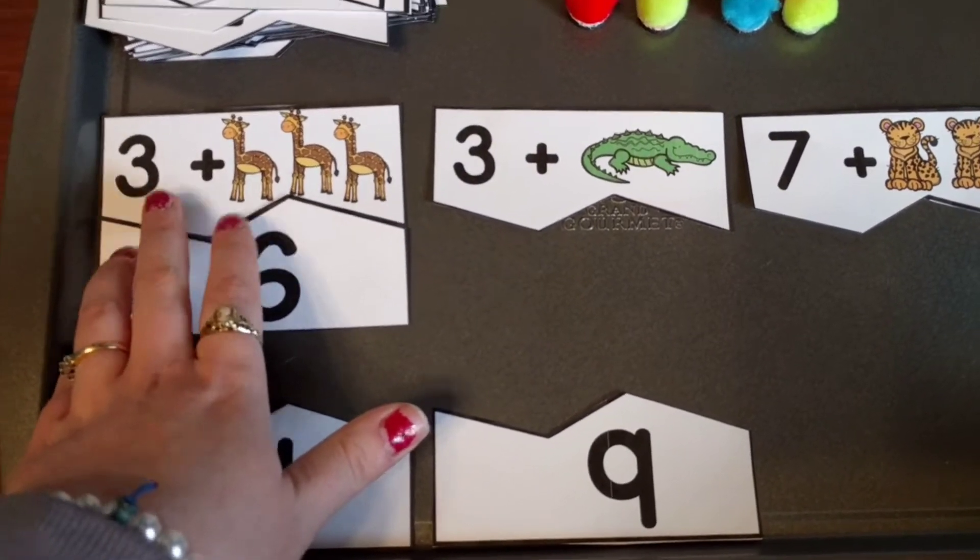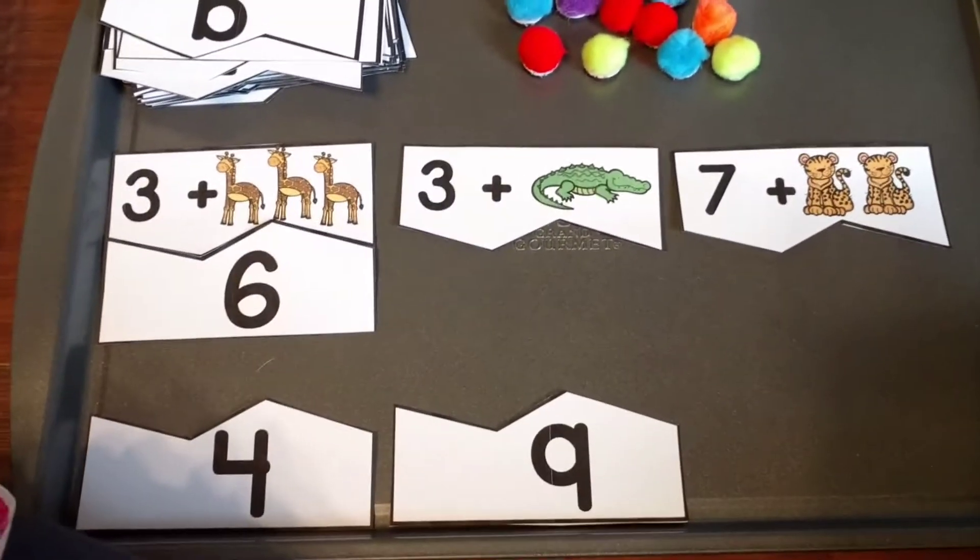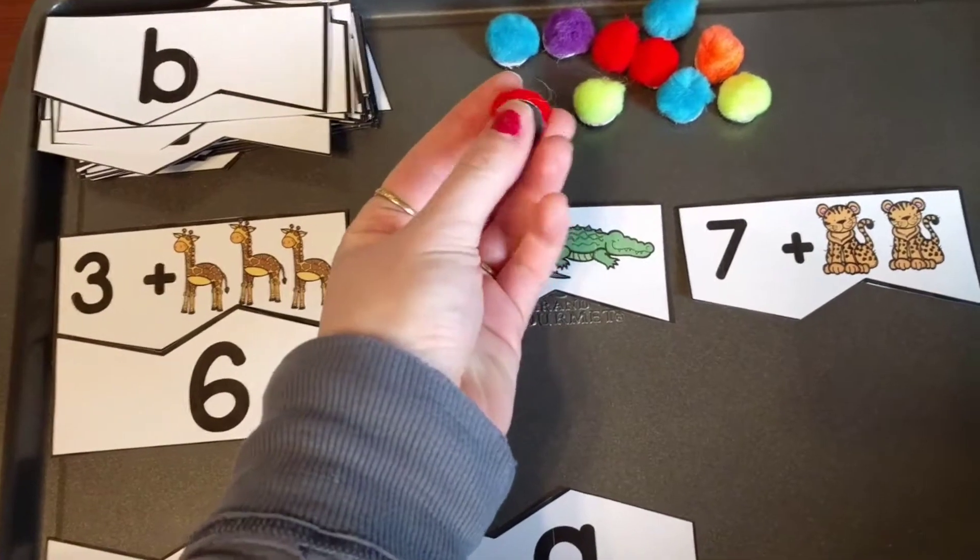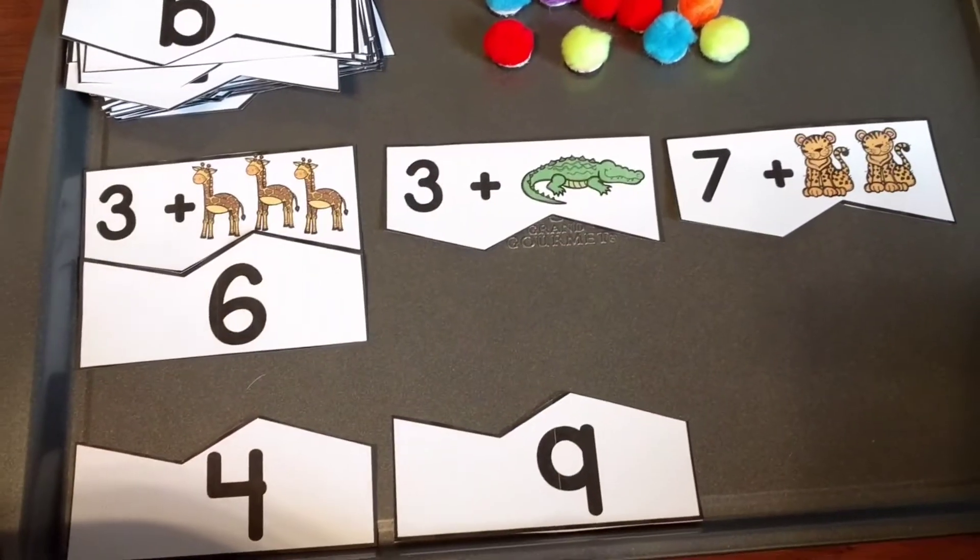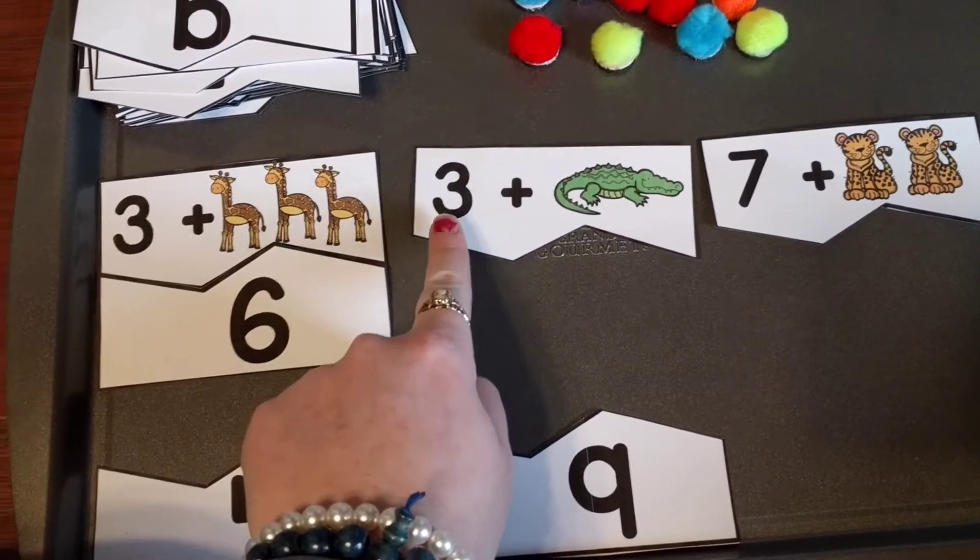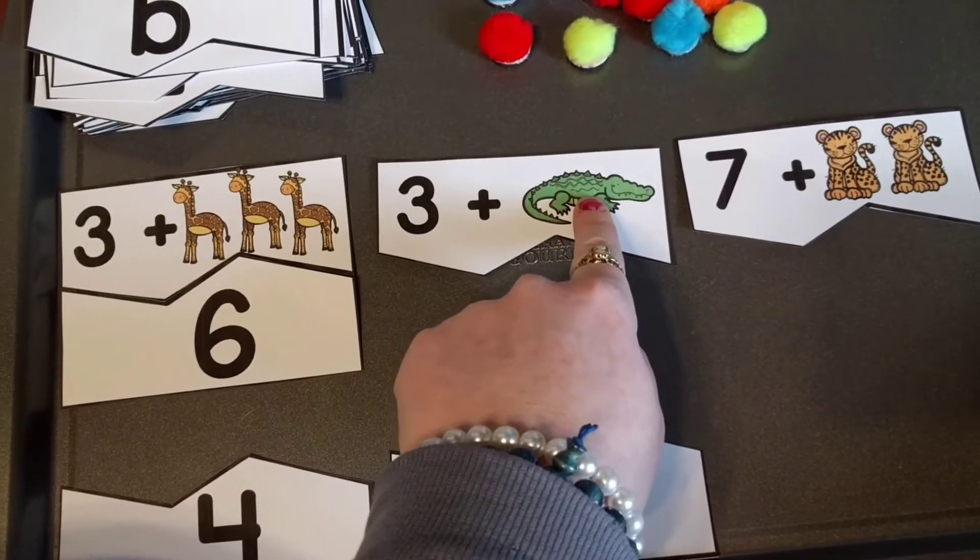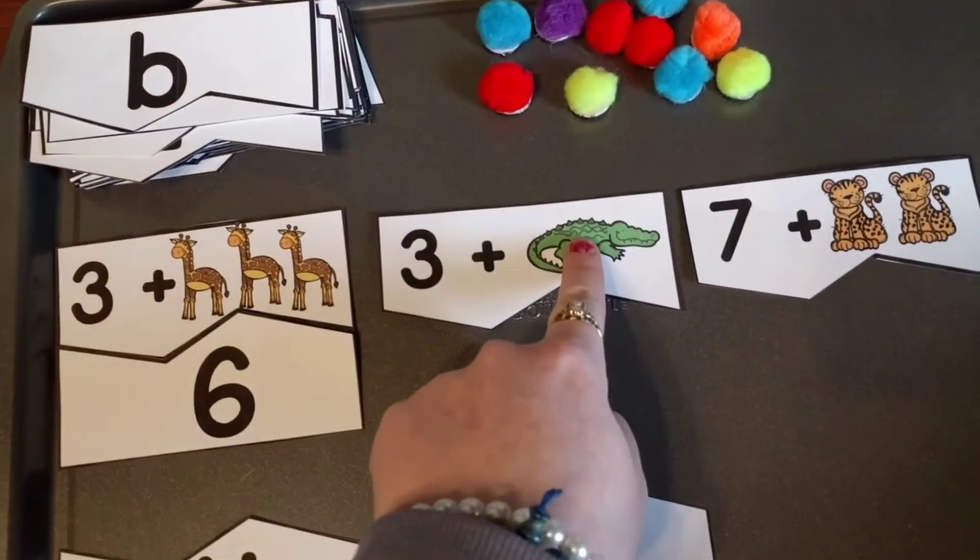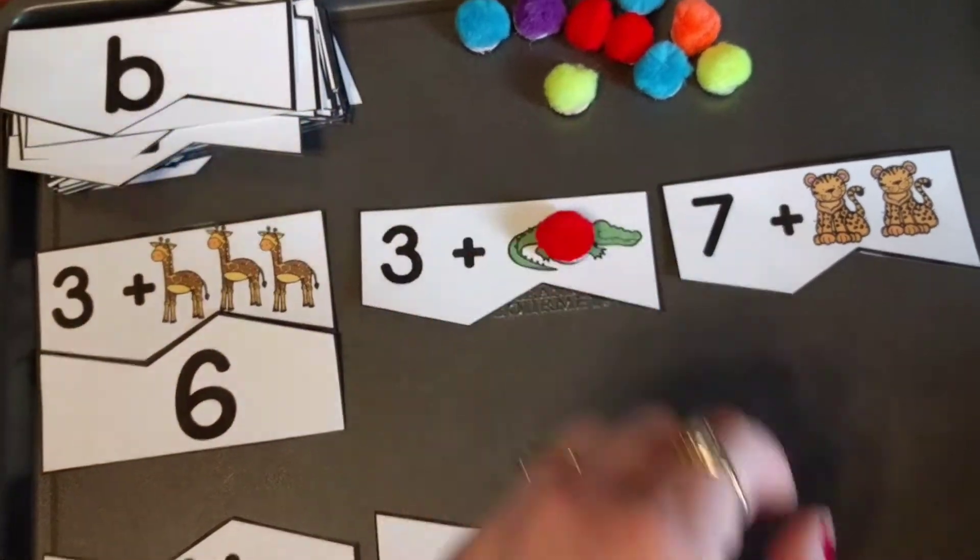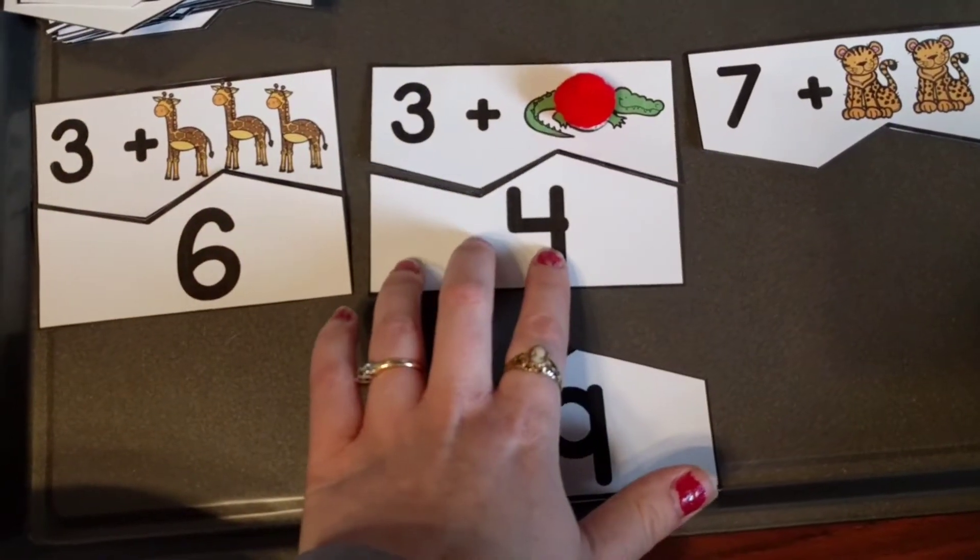Now, another way to do it to help them be a little bit more tactile and actually see how they're counting on is to use some sort of object. Right here I have magnetic pom-poms, but you could use anything you want. And so for this one we already have the number here, so tell them to say 3. And then the next number, because we're just adding one more, is 4. Well, instead of just touching it with their finger, they could use an object. So they could say 3 and then put the object on there, 4. And then they look down here and they would find their match.